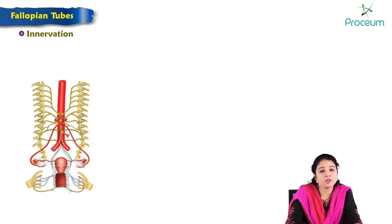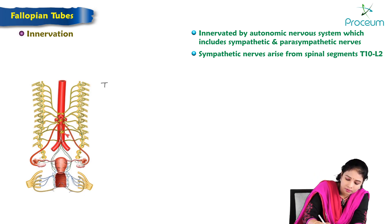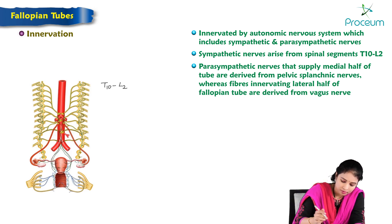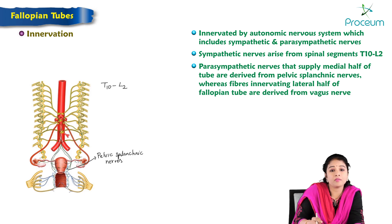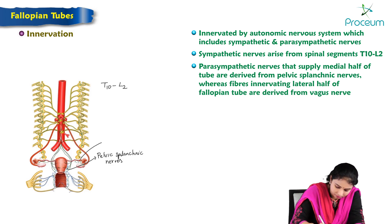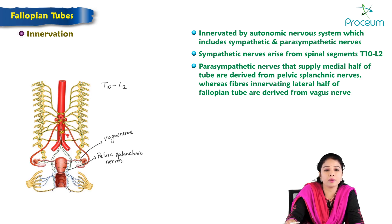The fallopian tubes are innervated by the autonomic nervous system, which includes sympathetic and parasympathetic nerves. The sympathetic nerves arise from T10 to L2 spinal segments. The parasympathetic nerves supplying the medial half of the tube are derived from the pelvic splanchnic nerves, whereas the fibers innervating the lateral half of the fallopian tube are derived from the vagus nerve.